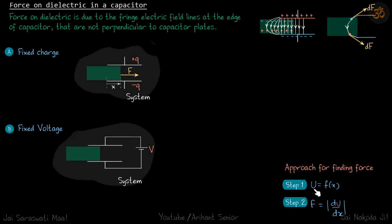We write U as a function of x, where U is the potential energy of the system and x is how far the dielectric has been inserted. The force F is then found by F = dU/dx, because if the dielectric moves by dx the work done by the system is F·dx, and that equals the change in potential energy. So the second step is F = dU/dx.